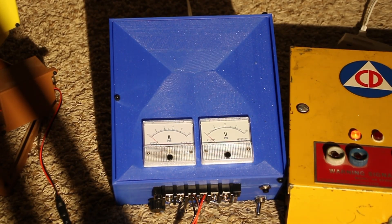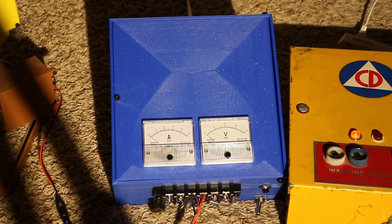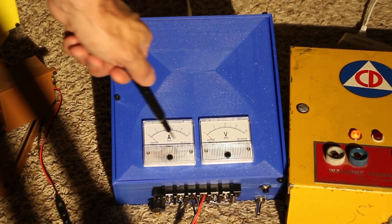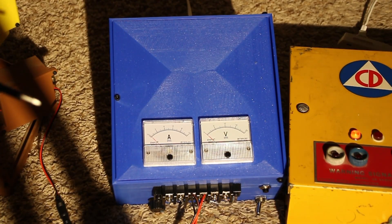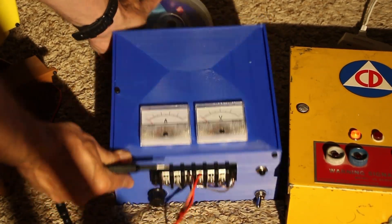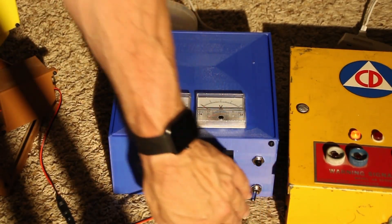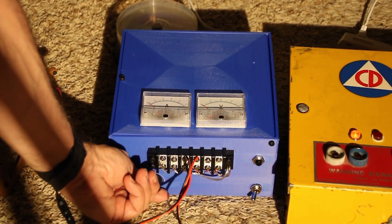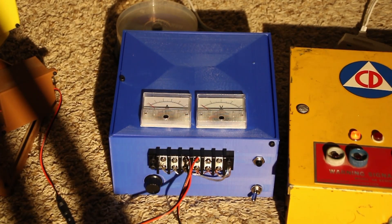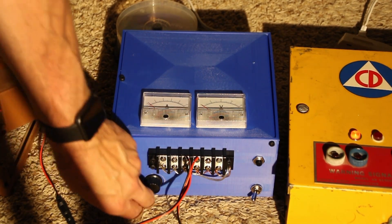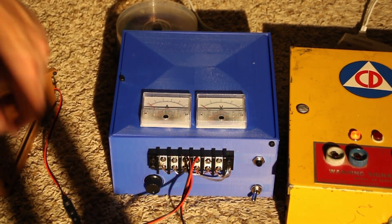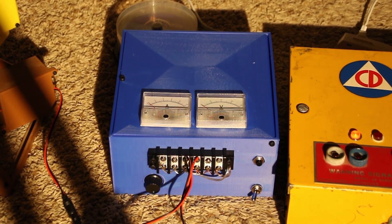Then the second toy that I have is this custom designed and 3D printed power supply. I've got a volt gauge, I've got an amp gauge on it. Then at the bottom here I've got terminal for positive and negative, I have a switch, and I have a speed controller in here too. I do have a speed control here and I can switch back and forth between the outputs.